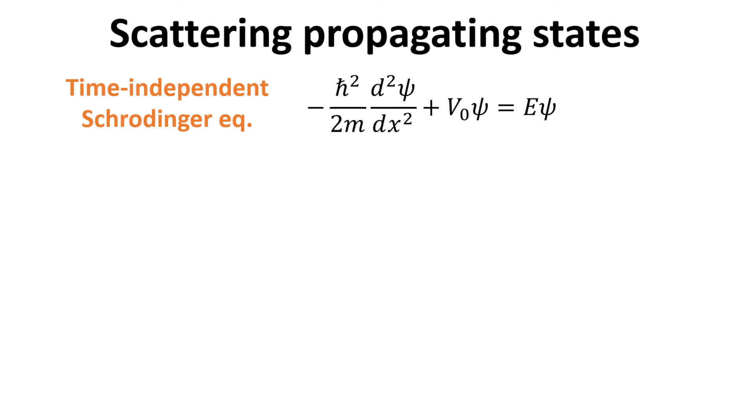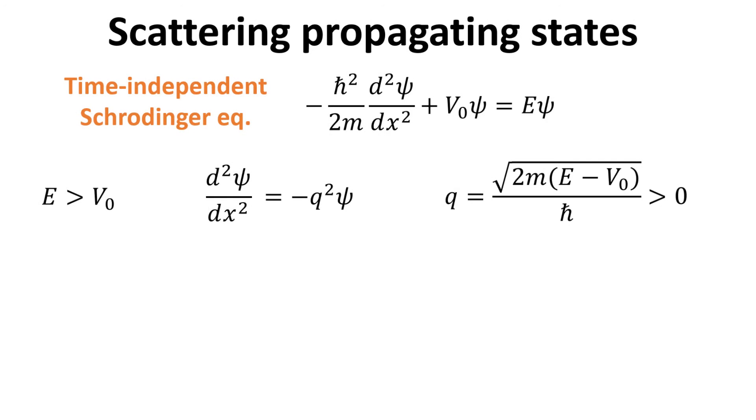In each of these regions, the potential is a constant, which we denoted as V0. Assuming that the electron energy is larger than the potential energy, we can rewrite the Schrödinger equation as follows, where the wave vector Q defined this way is a real positive number.